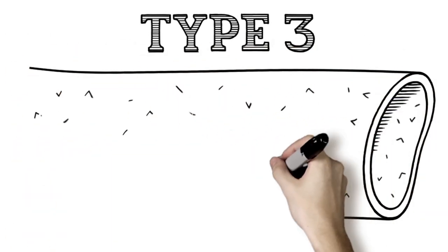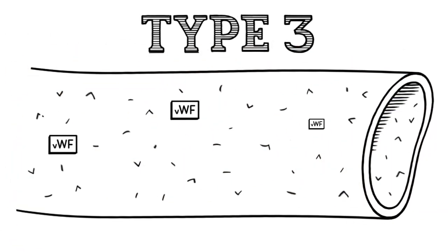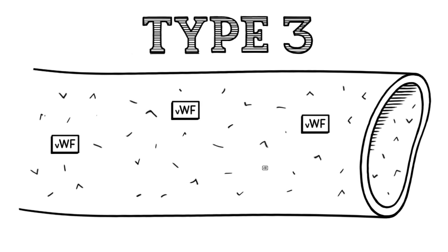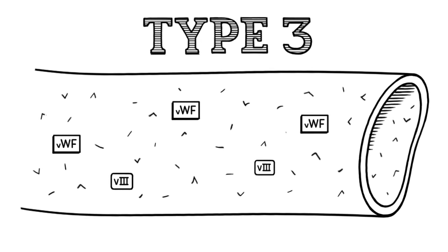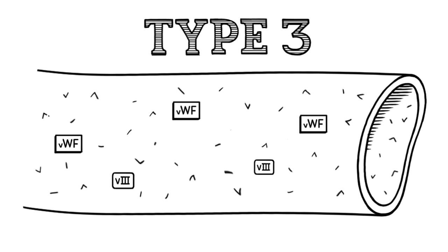In type 3 VWD, the body makes very little or no Von Willebrand factor. It also has low levels of factor 8. Type 3 is generally considered to be the most severe type of VWD.